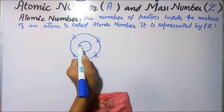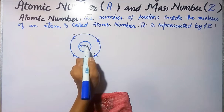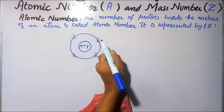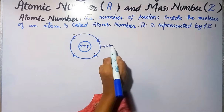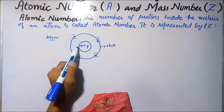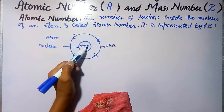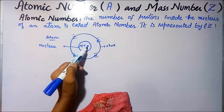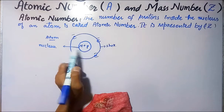Who is in the nucleus? Neutron plus proton. This is our orbit, our shell, and this is our nucleus. The number of protons inside the nucleus of an atom is called atomic number, and it is represented by Z.